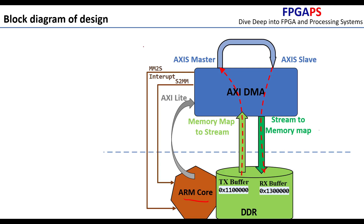In the second scenario, we use the two interrupts from the DMA to let the ARM core know when each transaction is completed. Interrupts allow the processor to perform other tasks while waiting for the event, which greatly improves the efficiency of the ARM core. Now let's go and start our Vivado design.